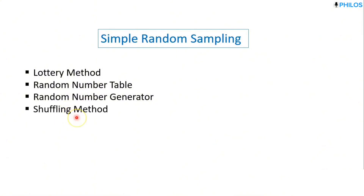Another method is the shuffling method, which is similar to the lottery method. You give each member of the population a unique ID, then shuffle the list of IDs either manually or using software. If you need a sample of five, you just pick the first five from the shuffled list.